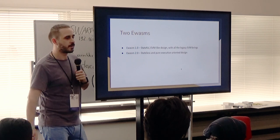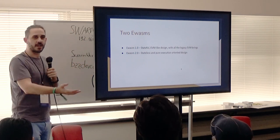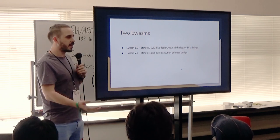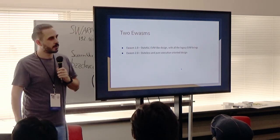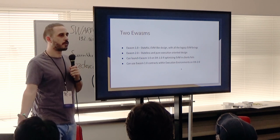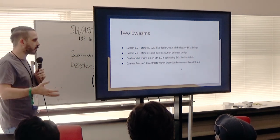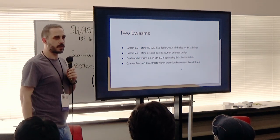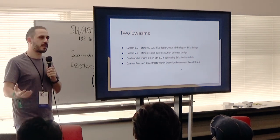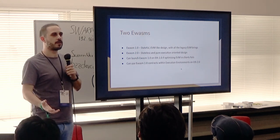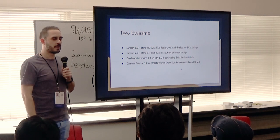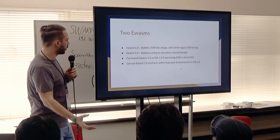We ended up with two EWASMs: EWASM 1.0, which is the stateful form, EVM compatible but with all the legacy of EVM. And EWASM 2.0, which is stateless and really just about pure execution. We can launch EWASM 1.0 on Eth1. But you can also use EWASM 1.0 contracts within these execution environments, because I think everybody understands stateful contracts way more than stateless models. You may want to keep using EWASM 1.0 as a stateful model encapsulated into EWASM 2.0 shards.